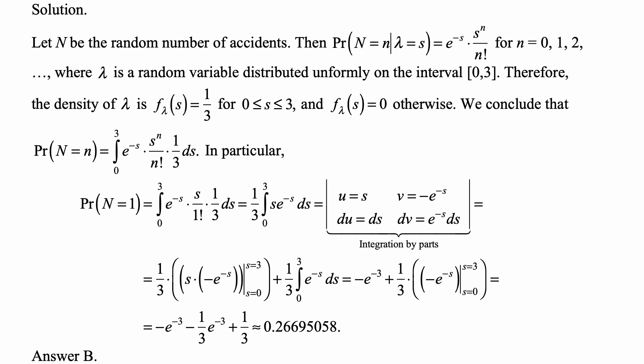Therefore, what we get is 1/3 times the product of u and v, which is s times minus e to the minus s, which you see here, evaluated from 0 to 3, plus 1/3, plus because it's minus v du, but minus minus gives us a plus. And then it's 1/3 from the coefficient in front, in both cases, of the integral from 0 to 3 of e to the minus s ds.